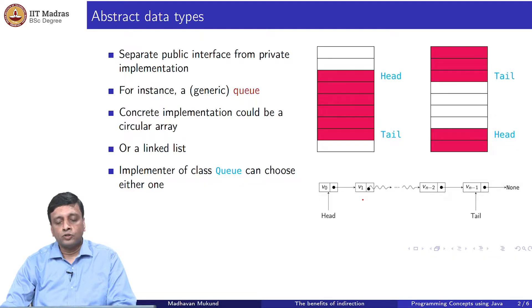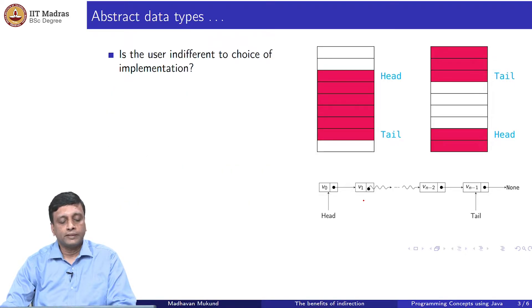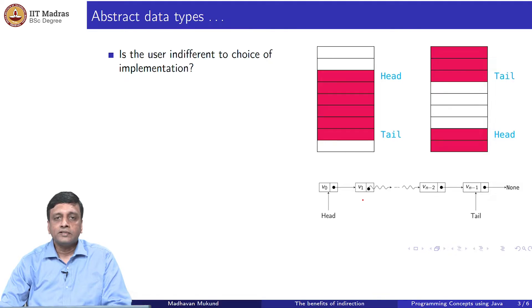As an implementer, I could choose either one. The whole point of an abstract data type is that the public interface is unchanged. As a user of the queue, the use of these functions, add and remove and size will not be affected by the choice of implementation. But the question is, although the functionality that is the way that these functions behave is not affected by the implementation, is it true that the user is actually indifferent to these choices. We can see that these choices are very different in the way they represent the data. And this has some implications for performance, for example.